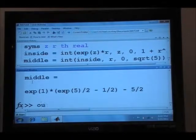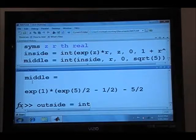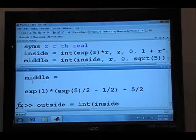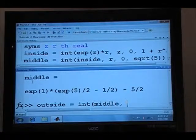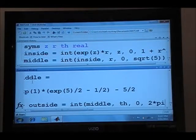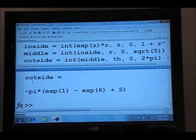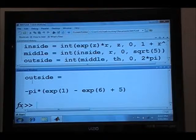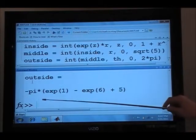And now the outside integral, which is the same as the final answer, is equal to the integral of the inside integral, oops, over the middle integral. And now the variable is theta from zero to two pi. Alright, now this is a relatively non-trivial answer.